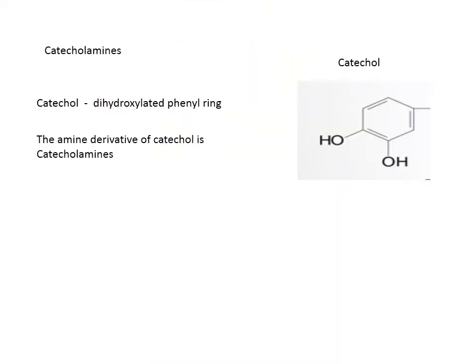What are catecholamines? Catecholamines are compounds with a benzene ring bearing two hydroxy groups — called catechol. Catechols are dihydroxylated phenyl rings. The amine derivatives of catechol are catecholamines — that is, when an amine group is added to catechol, you get catecholamines.